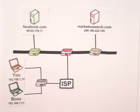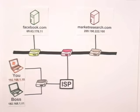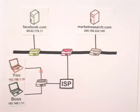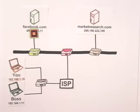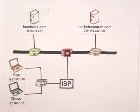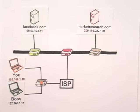Imagine each packet as a piece of candy wrapped in several layers. The first layer is your computer's IP address. Your computer sends the packet to the first router, which adds its own IP address. Each time the packet reaches a new router, another layer is added until it reaches the server. Then, when the server sends back information, it creates packets with an identical wrapping. As the packet makes its way over the internet back to your computer, each router unwraps a layer to discover where to send the packet next, until it reaches your computer and not your boss's.